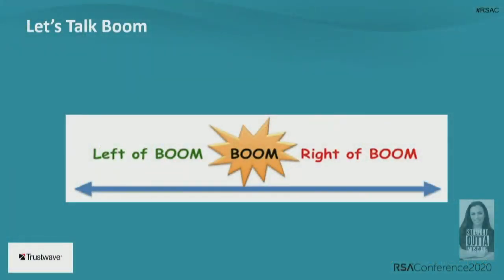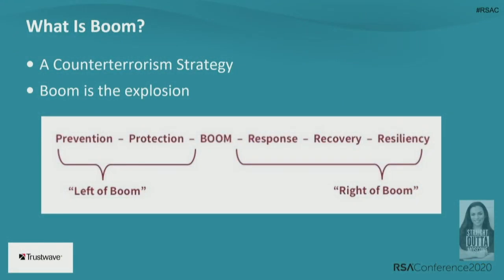We posit this particular model from military and counterterrorism strategy. You've probably seen something similar referred to as 'boom' — the moment where an incident takes place, the user has something in front of them, and boom, there's the action that starts the chain of events. We have 'right of boom' — our preemptive measures — and 'left of boom' — our response and recovery. We start with boom: the user at the proximity of a user-initiated loss.